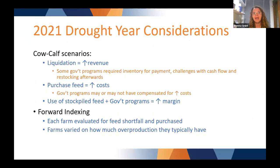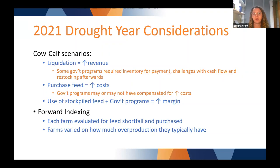Before we dig into the numbers, we must comment on the fact that our benchmark year right now is 2021, so we have drought considerations. For many producers, we have three different scenarios: some were forced to liquidate some of their herd, which actually increased revenue for the 2021 calf crop year but created a restocking challenge later. A second group purchased feed, which increased costs and decreased margins. And a third group had stockpiled feed available and actually saw increased margins.